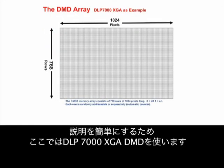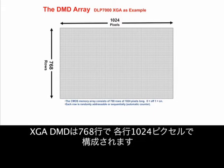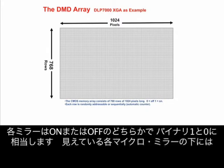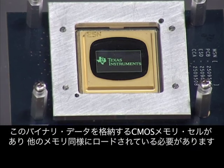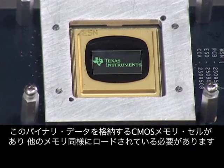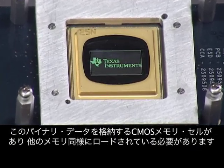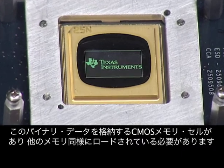For simplicity, we will use the DLP 7000 XGA DMD for our discussion. The XGA DMD is composed of 768 rows with 1024 pixels in each row. Each micromirror can be either on or off, corresponding to binary 1 and 0. Underneath each physical micromirror there is a CMOS memory cell, which stores this binary data and must be loaded like any other memory.